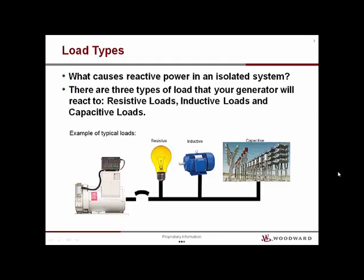What causes reactive power in an isolated system? Reactive power in an AC generator is caused by the load that is on the generator. The load types are resistive, inductive, and capacitive. Resistive loads consist of devices that are purely resistive in nature, with no inductive or capacitive reactance. These are physical devices consisting of the line resistance of the wires, baseboard heaters, and incandescent light bulbs. A purely resistive load will create a unity power factor, or a power factor of 1.0.